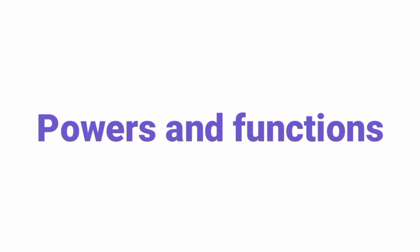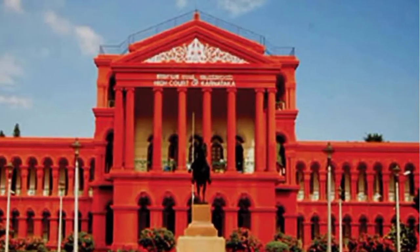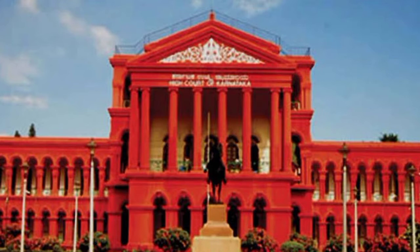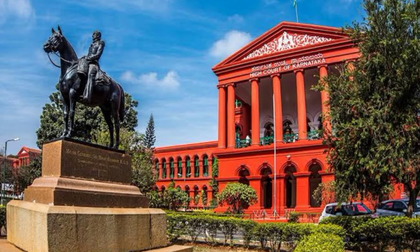The High Court has power over the whole state. Its functions include: Original Power to resolve civil and criminal cases like naval, marital, and contempt of court cases; to admit appeals against judgments passed by subordinate courts in civil and criminal cases; to direct transfer of cases from lower courts to the High Court; to supervise the working of subordinate courts; to admit writs and petitions; and to safeguard the fundamental rights and other legal rights of citizens.